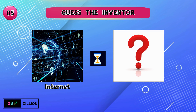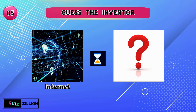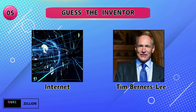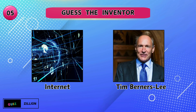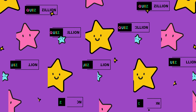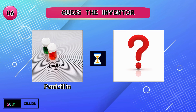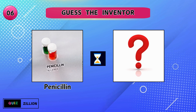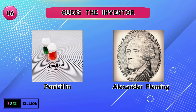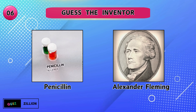Who innovated the internet? The internet was found by Tim Berners-Lee. Do you know who invented penicillin? Alexander Fleming discovered penicillin.